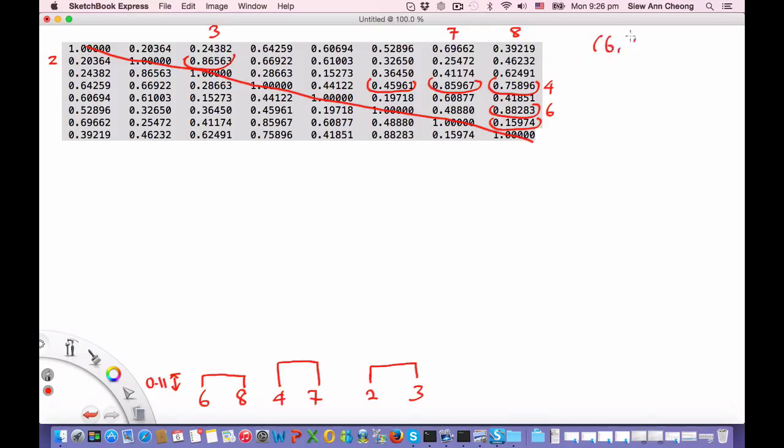So is there any other correlation we need to pick? So the pairs that we can construct out of 6, 8 and 4, 7 will be 6 to 4, 6 to 7, 8 to 4, 8 to 7. So we have checked this. The remaining thing to check will be 6, 7. So that is this one here, 0.15974. So this is not the smallest, the smallest is here between 8 and 7, and the correlation is 0.15974. So the distance is actually close to about 0.84. So we have to draw one up here. So this will merge the two clusters, but at this particular correlation level.